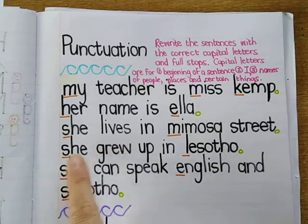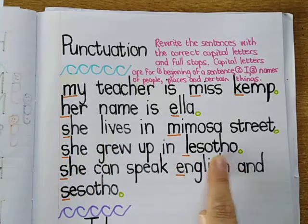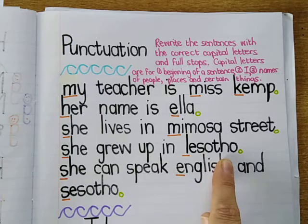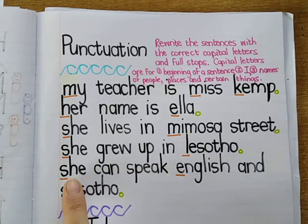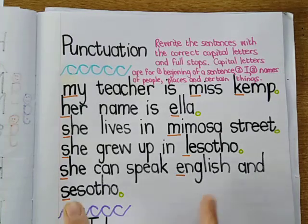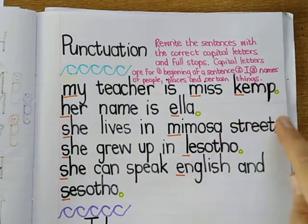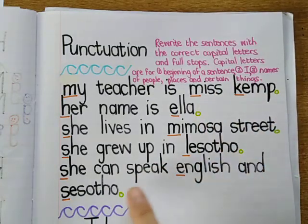She grew up in Lesotho. Lesotho is the name of the country. And then, the languages that she can speak are English and Sesotho. Those are the names of the languages, so they also get capital letters. And then, you should know already that every sentence must end with a full stop.